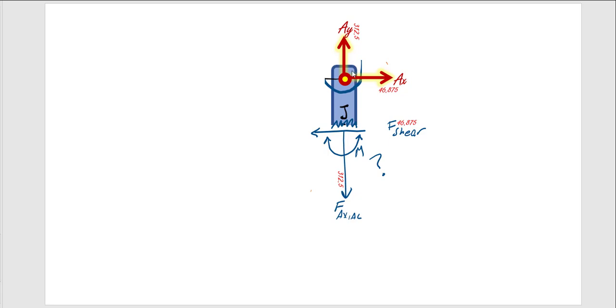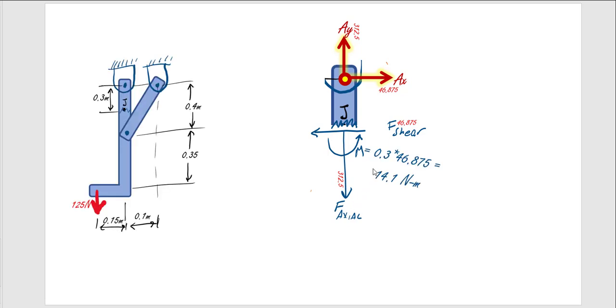To balance everything out in the Y direction, we have 312 pulling up, which means our axial force is going to be 312 holding down. And the final calculation for our internal bending moment.